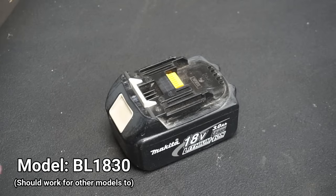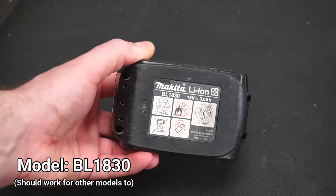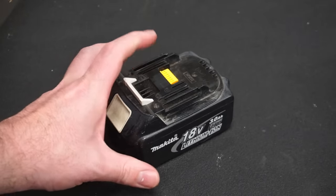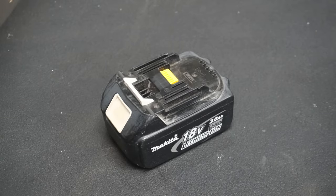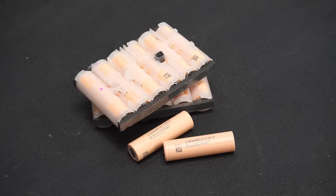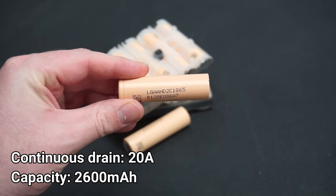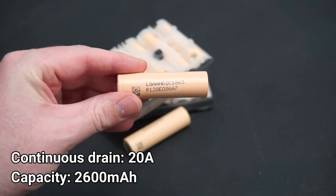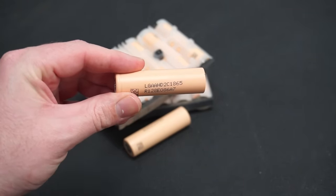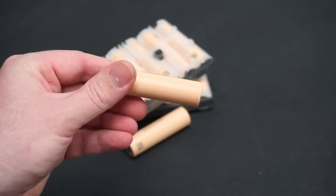The model of battery I'll be repacking is BL1830, but this tutorial should work for other models as well. I'll be repacking the battery using these salvaged LG 18650 lithium cells. These cells are rated for high drain current, which is important to consider when buying new cells to repack your 18-volt batteries with.